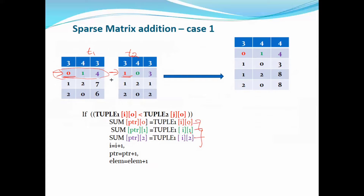We are using the pointer PTR for the sum value. We can use the pointer PTR and we are using the pointer IU for the IA area, so it will be implemented. This can be optional. The total number of nonzero elements are counted.